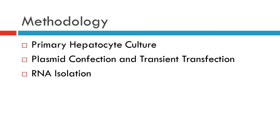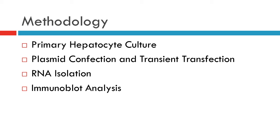The fourth method used was immunoblot analysis. Nuclear extracts and membrane fractions were prepared from cultured hepatocytes using the NE-PER nuclear and cytoplasmic extraction reagent kit. Immunoblot analysis was performed using a monoclonal anti-SREBP1 antibody, a lamin-AC antibody from Cell Signaling, and an enhanced chemiluminescent system.